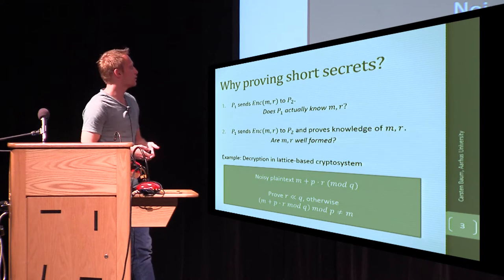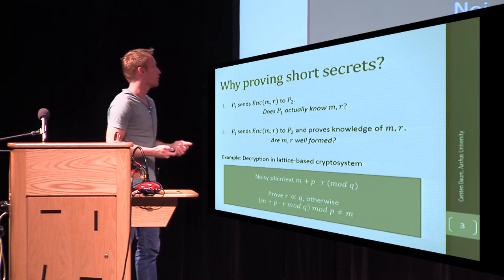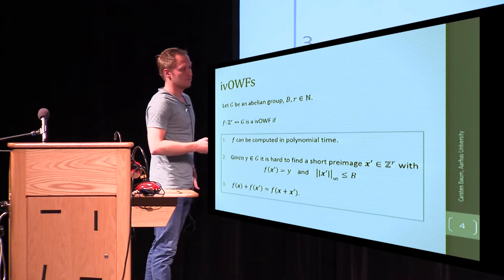And therefore, it's very crucial to have these zero-knowledge proofs, for example, in this situation. More in general, in our work we define homomorphic one-way functions over the integers as the main building block we're talking about.